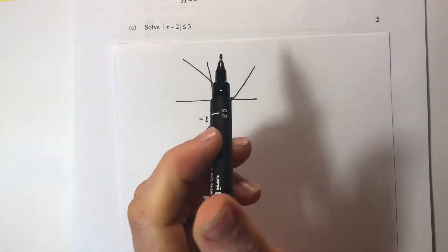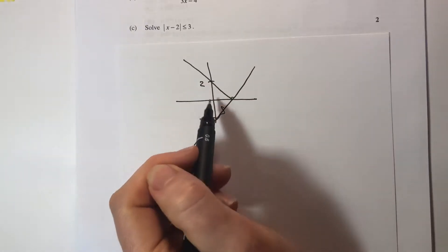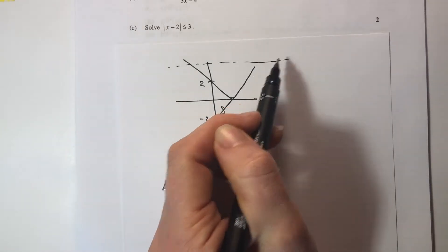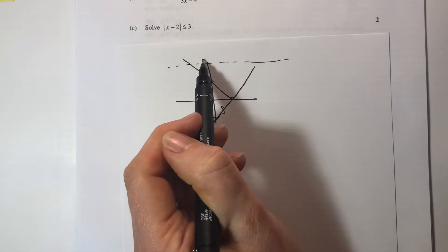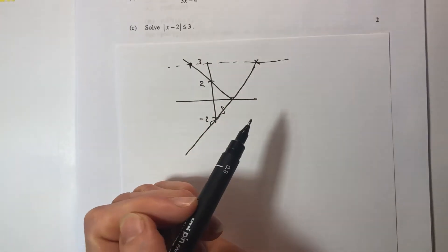Now we want to know when that is going to be less than 3. Now that value would have had to be 2 because of the bounce. Being less than or equal to 3 would mean being underneath this line here at 3. So I can see clearly that there's an answer there and there's an answer there.